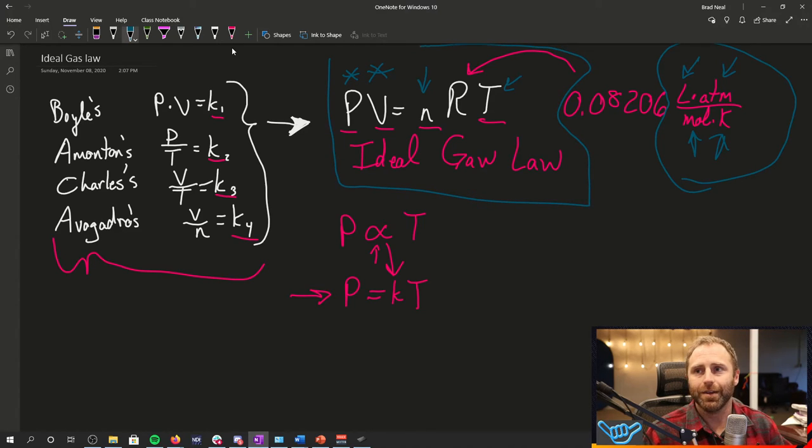The ideal gas law is going to be nice because if you know three of the variables, you can always find the fourth for a gas.